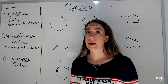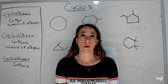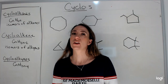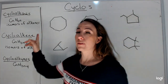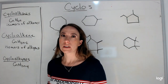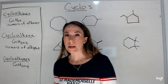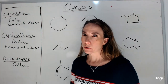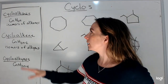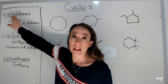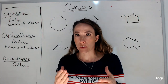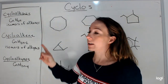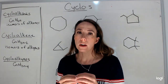Let's talk about naming cycloalkanes, cycloalkenes, and cycloalkynes. The first thing to note is their general formulas, which is going to be really important in the isomer unit especially. A cyclo is a circle, and alkane means all single bonds.